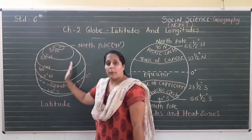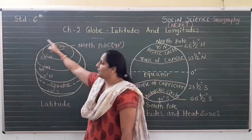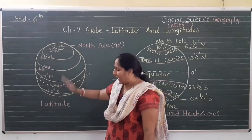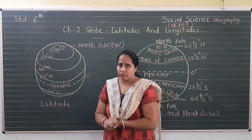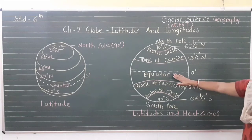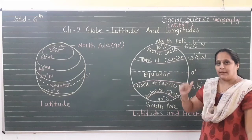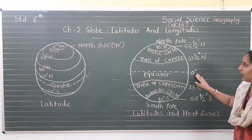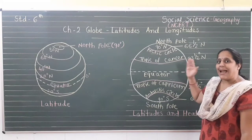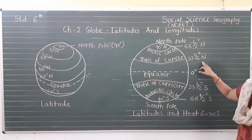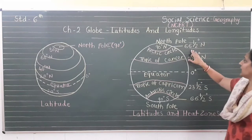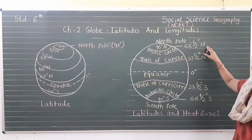The total circle indicates 360 degrees, so the northern hemisphere is 180 degrees and the southern hemisphere is also 180 degrees. Through this diagram we understand the different latitudes and heat zones. The equator indicates zero degrees. The Tropic of Cancer is a parallel line which indicates 23 and a half degrees north. Above that is the Arctic Circle, which indicates 66 and a half degrees north. The north pole indicates 90 degrees north latitude.